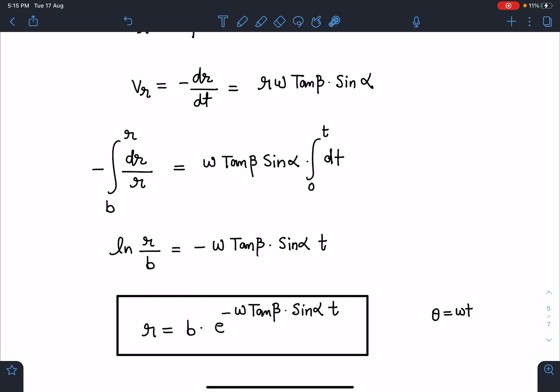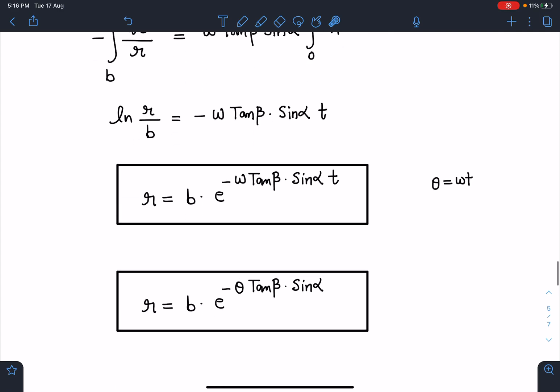Finally we need to express our answer in terms of θ. So r equals b times e to the power minus θ tan β sin α. This is r as a function of θ.